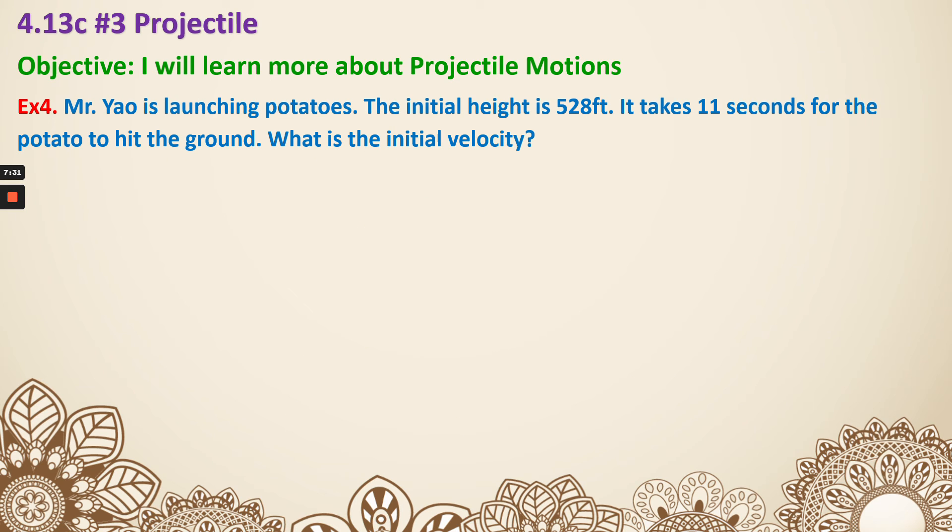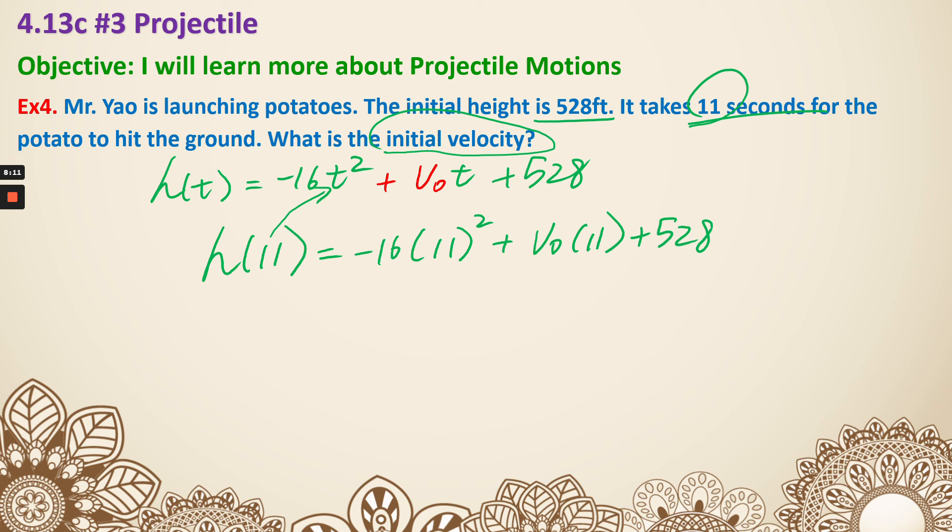Last one, example 4. Mr. Yao is launching potatoes. The initial height is 528 feet. So negative 16t squared. And it didn't say anything about initial velocity, and it's actually asking for initial velocity. That means I actually don't know my initial velocity. Plus v sub 0. The rest is going to still be there. So t and initial height is 528. Then you will notice, it actually tells you about a time. It takes 11 seconds. So I'm going to put it as 11 seconds. That means I'm plugging in 11 for t. So negative 16, then 11 squared plus, I still do not know my v sub 0, and it's 11 plus 528.